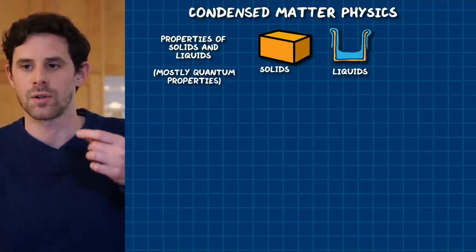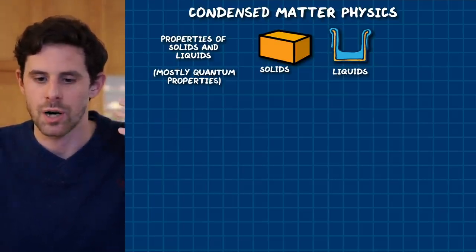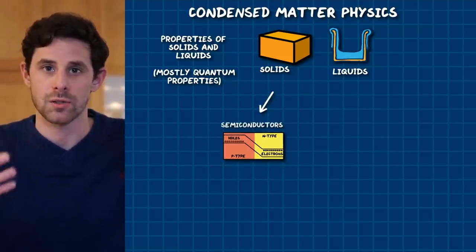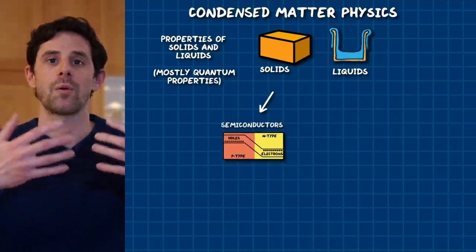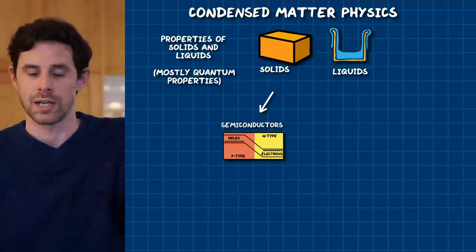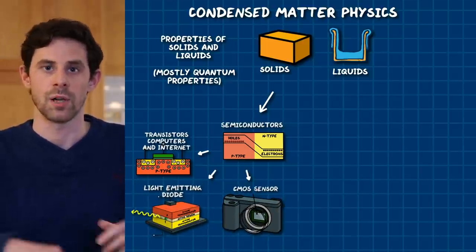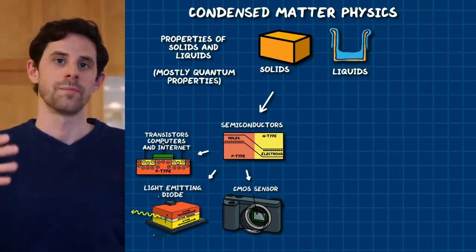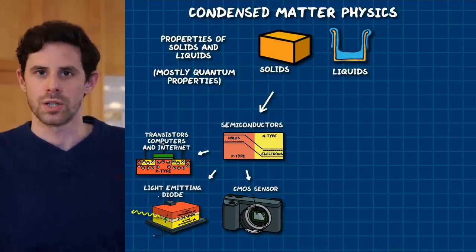A big success story of condensed matter physics was being able to describe and understand the band structure — so how semiconductors conduct electricity. That led to a huge amount of technologies like computers, the internet, the digital revolution, digital cameras, the screen you're watching this on. A big part of humanity's story is our ability to find and harness materials and use their physical properties to invent new technology.